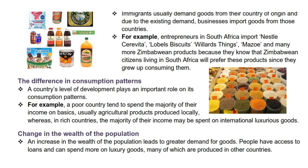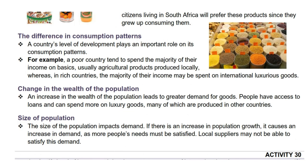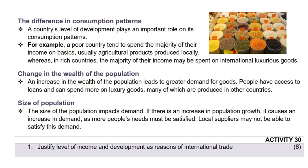The next reason is the difference in consumption patterns. A country's level of development plays an important role on its consumption patterns. For example, a poor country tends to spend the majority of their income on basics, usually agricultural products produced locally. Whereas in rich countries, the majority of their income may be spent on international luxurious goods.